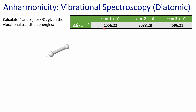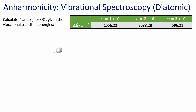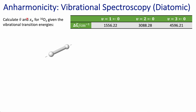We have energy associated with different vibrational transitions from the ground state to the first excited state, ground state to the second excited state, ground state to the third excited state. Those are given in units of wave numbers, and we're asked to calculate what is the vibrational transition wave number.